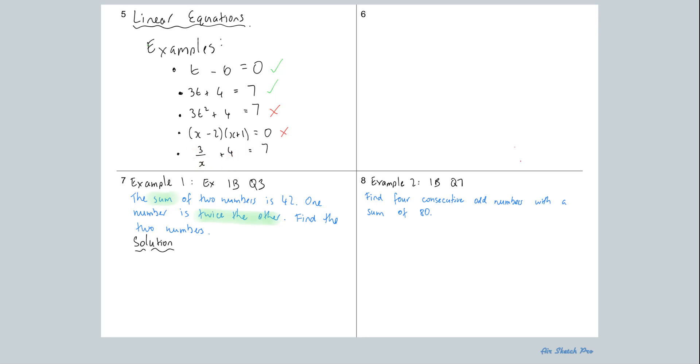Similarly with this one here, although the x has a power of 1, it is on the denominator. So you might remember from your index laws work that if you have a variable or a number on the bottom, that's actually raised to a negative power. So that's actually x to the power of negative 1. So this is also not an example of a linear equation, but the top two are.